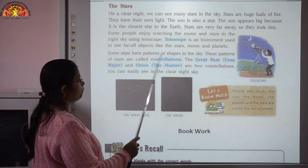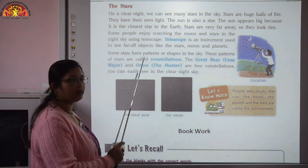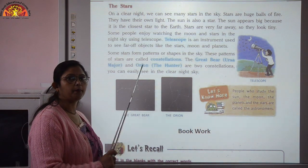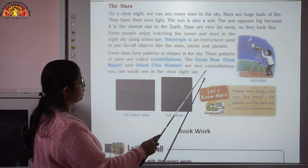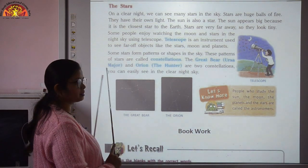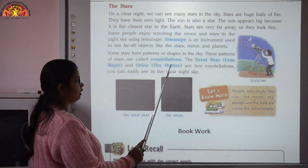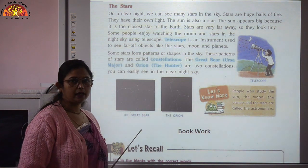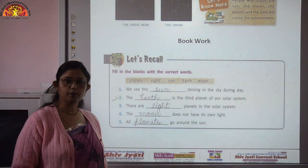Some stars form patterns or shapes in the sky. These patterns are called constellations. Some of the constellations are the Great Bear, also called Ursa Major, and the Orion, also called the Hunter. These are two examples of constellations. This is all about the explanation part.